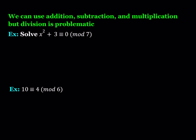Since modular arithmetic is a system of arithmetic with a finite number of integers, you're allowed to do pretty much the same operations as normal. You can add, subtract, or multiply the same number on both sides, but division is problematic. For example, we can subtract 3 from both sides of an equation, giving x squared is congruent to negative 3 mod 7.